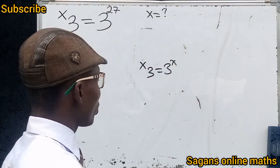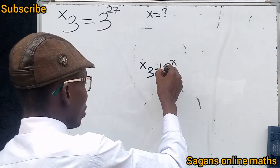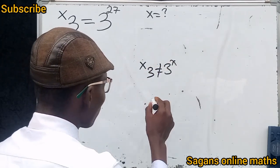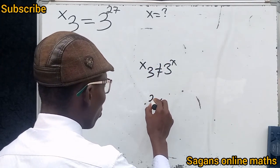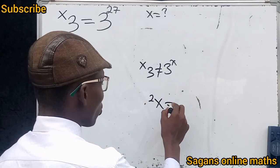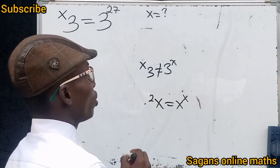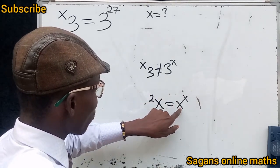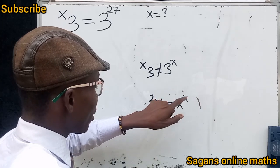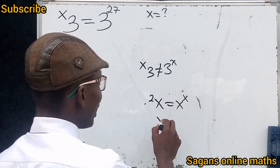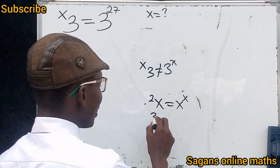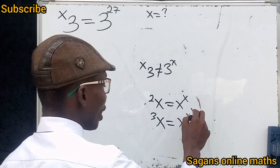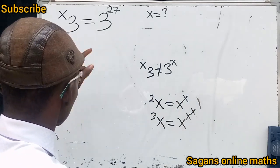For example, if I have 2 tetration x, tetration 2 equals s raised to the power of x. And if I have s tetration 3, it equals s raised to the power of 3 raised to the power of x. Tetration simply means a number raised to the power of itself.